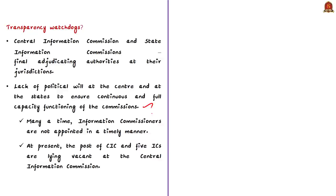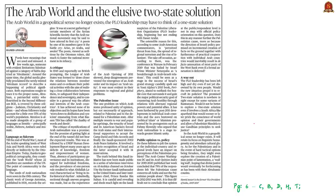At present, the post of Chief Information Commissioner and five Information Commissioners are lying vacant at the Central Information Commission. There is a lack of political will at both central and state levels to ensure continuous and full-capacity functioning of these commissions, and Information Commissioners are often not appointed in a timely manner. The author concludes that RTI is for the citizens, and citizens must assert and protect their fundamental right to information, which was attained after a long struggle of social movements, public protest, and democratic action.